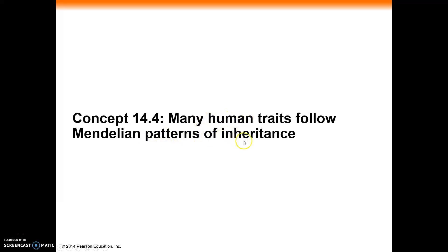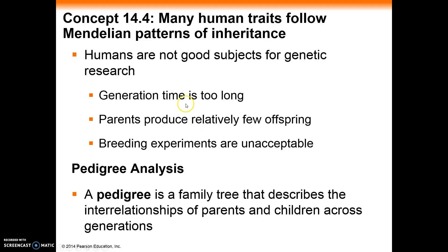Now there's a big problem with that — humans are not good subjects for research. Our generation time is too long, we produce very few offspring, and for some reason people frown on the idea of doing selective breeding. So we need to come up with an alternative for studying people, and most of this is done through something we call pedigree analysis.